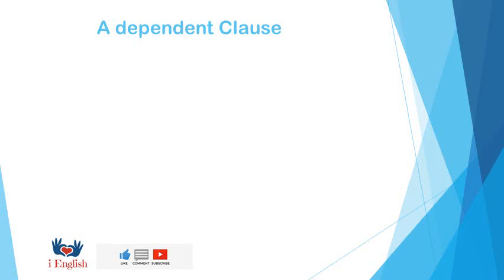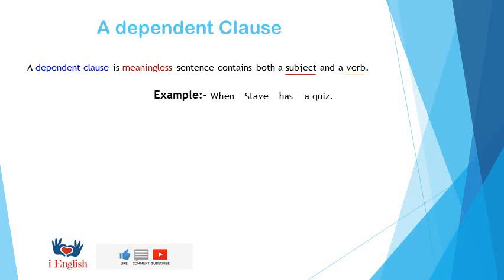A dependent clause. A dependent clause is meaningless sentence contains both a subject and a verb. Here is an example. When Steve has a quiz. When is a conjunction word. Steve is a subject. Has is a verb. A quiz is a predicate.